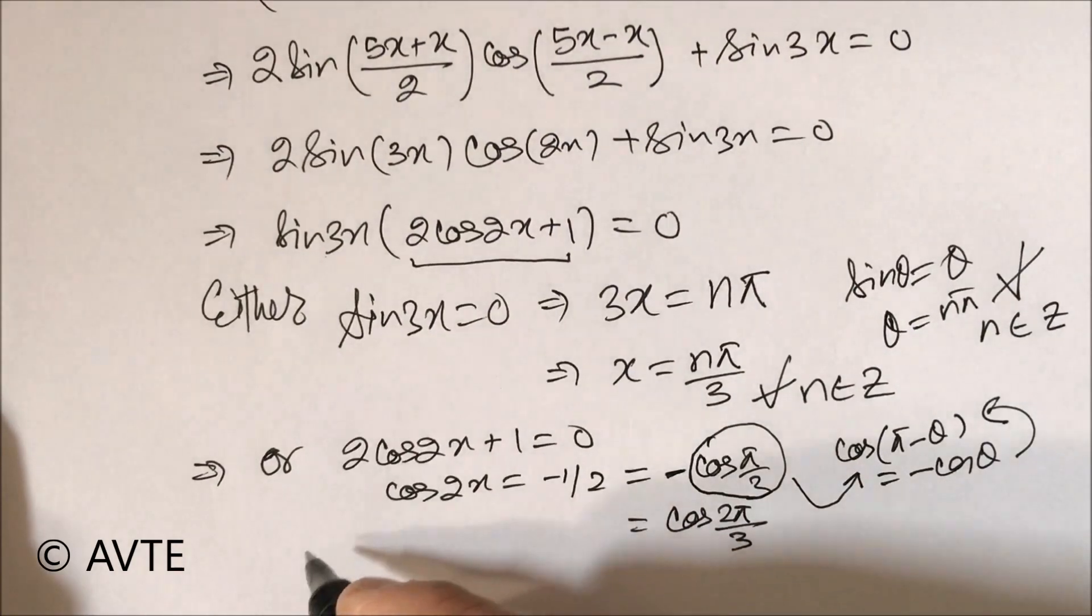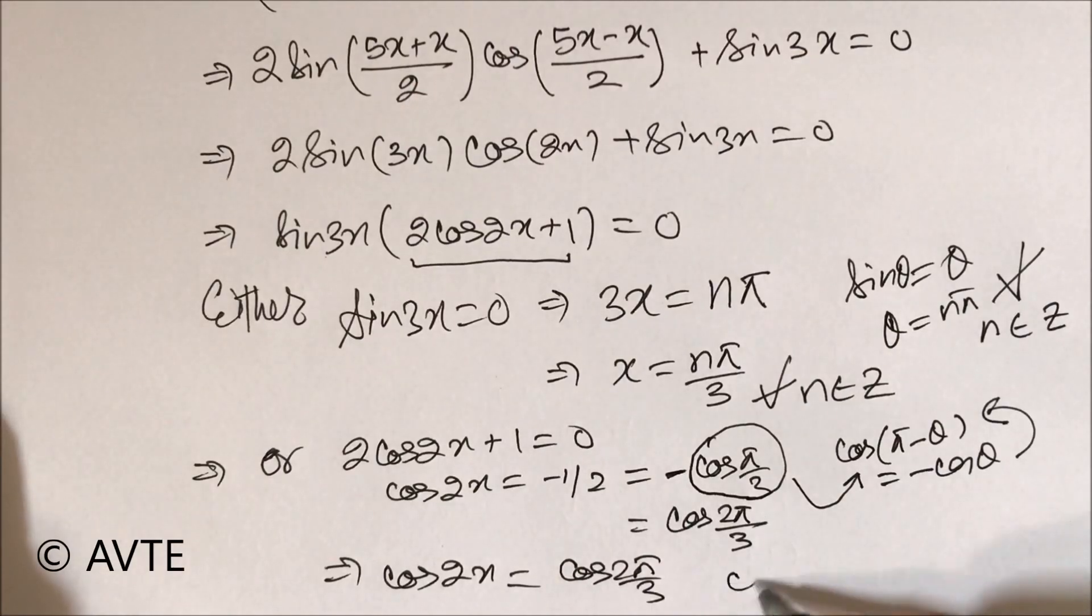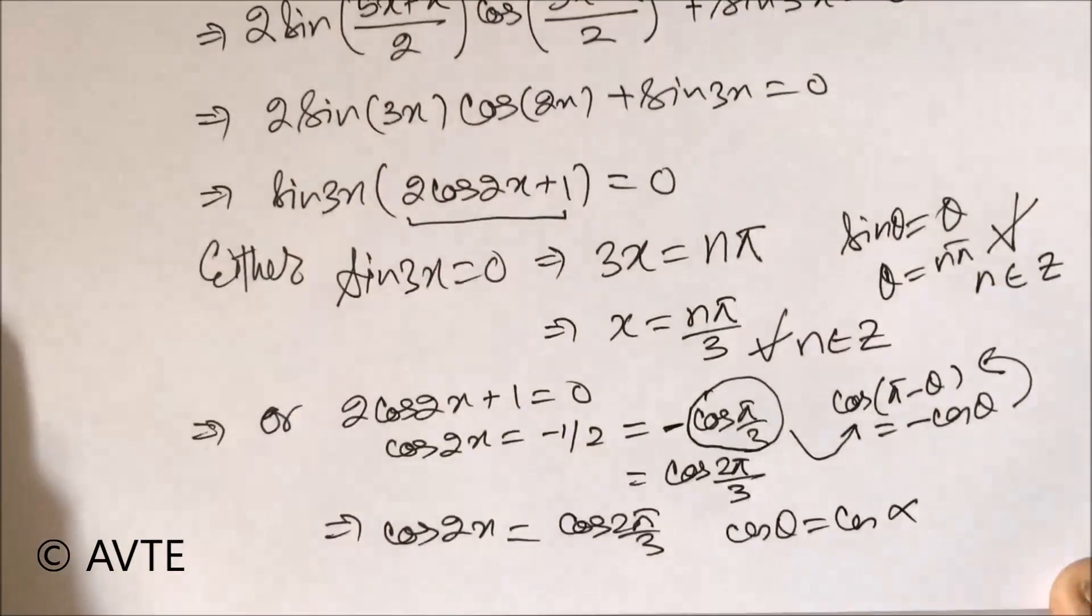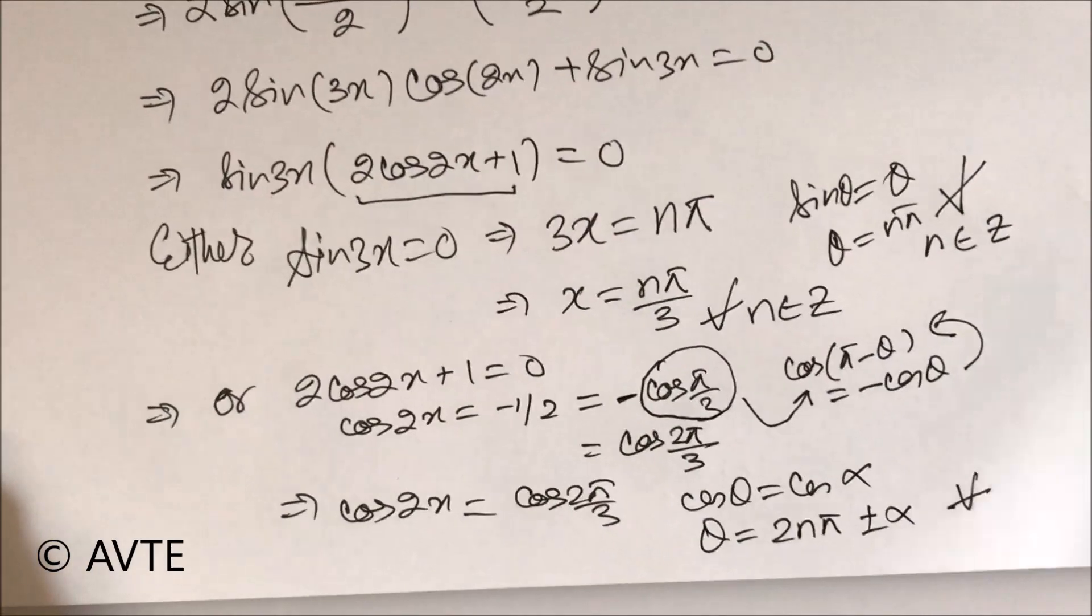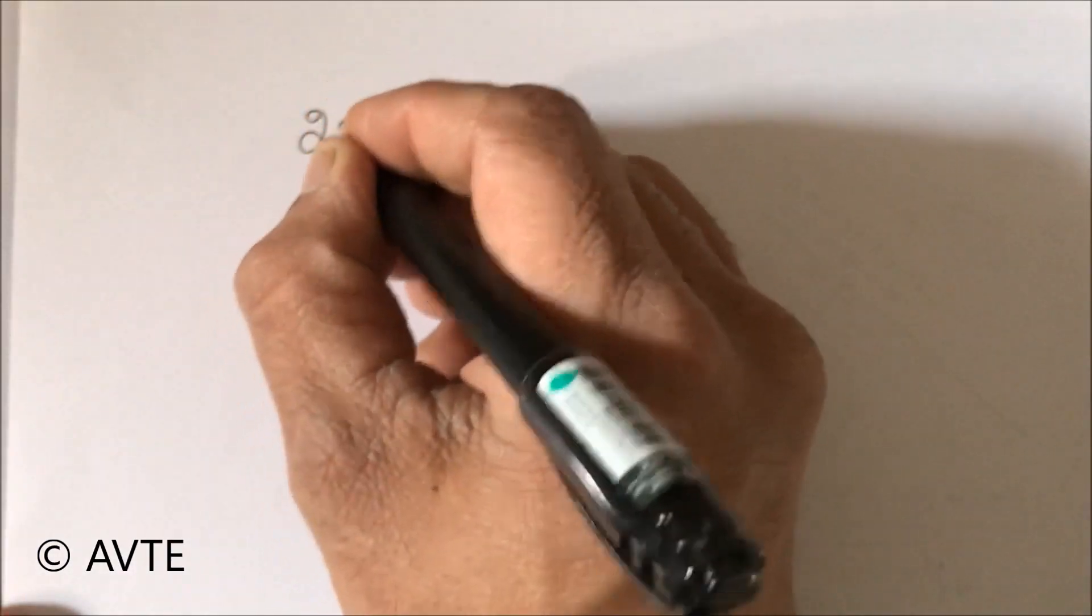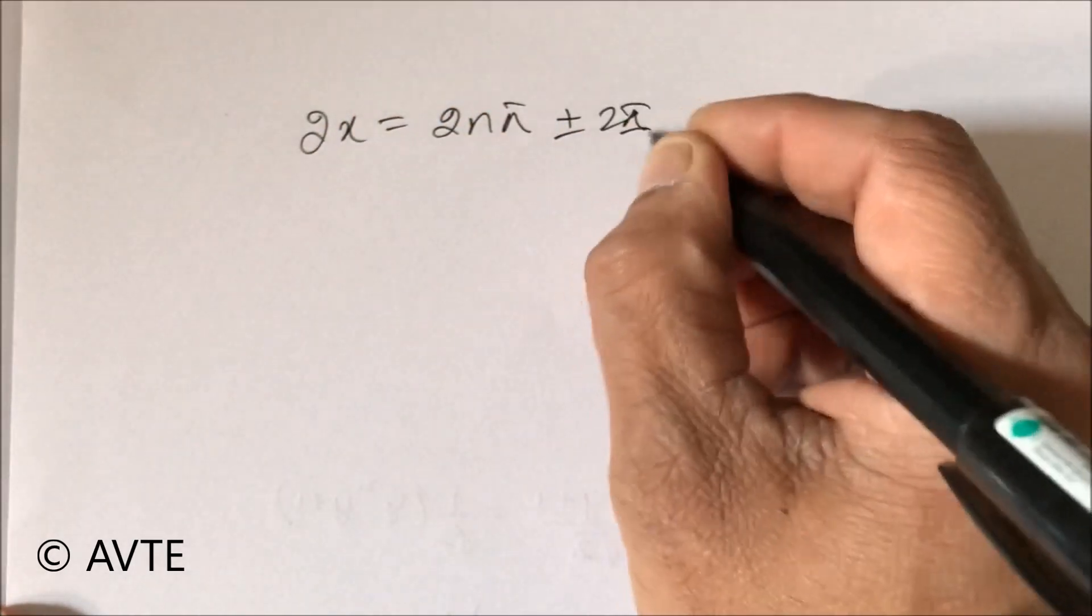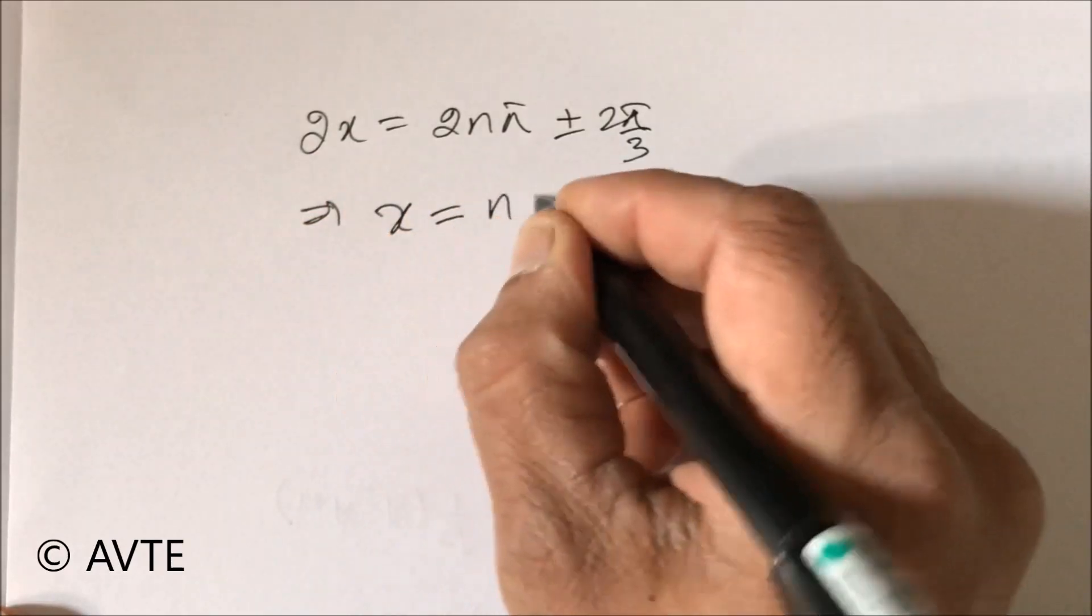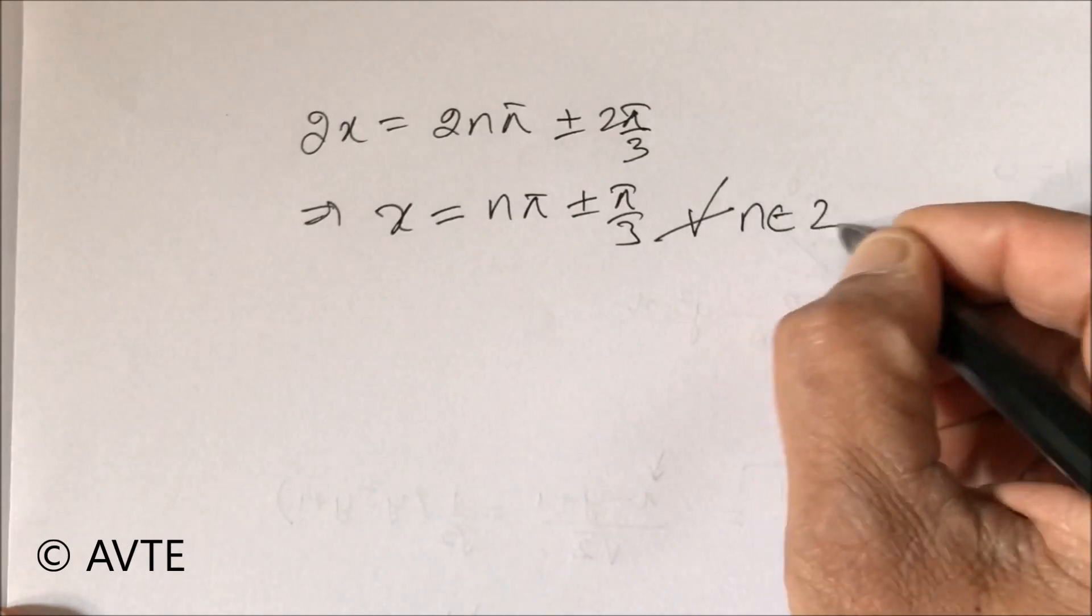So now it is very simple because we have cos 2x equals cos 2 pi by 3, and that is cos theta is equal to cos alpha and theta is equal to 2 n pi plus minus alpha for all the values of n belonging to integer. 2x is equal to 2 n pi plus minus 2 pi by 3 and x equals n pi plus minus pi by 3 for all the values of n belonging to integers.